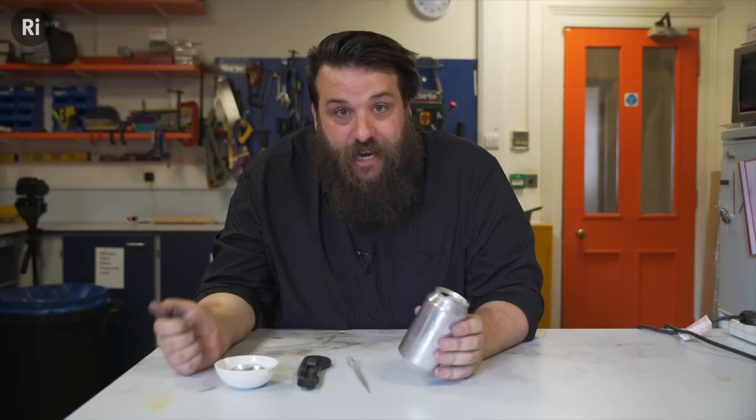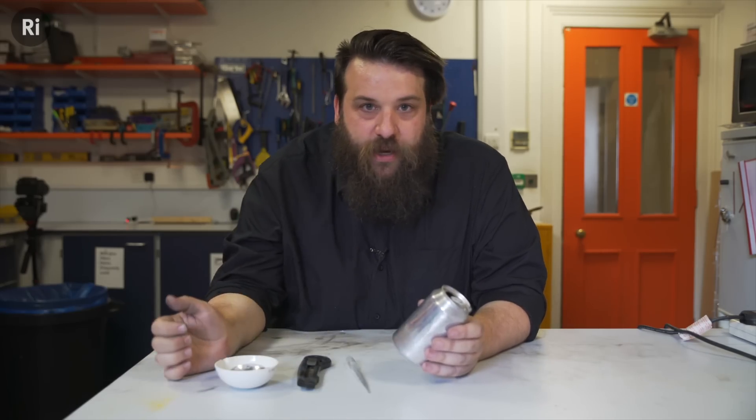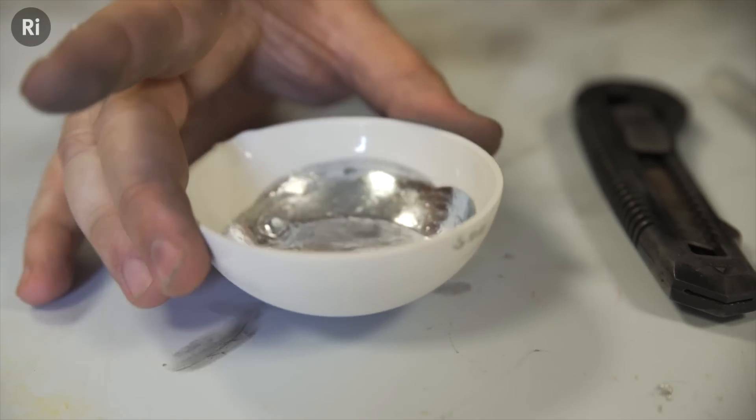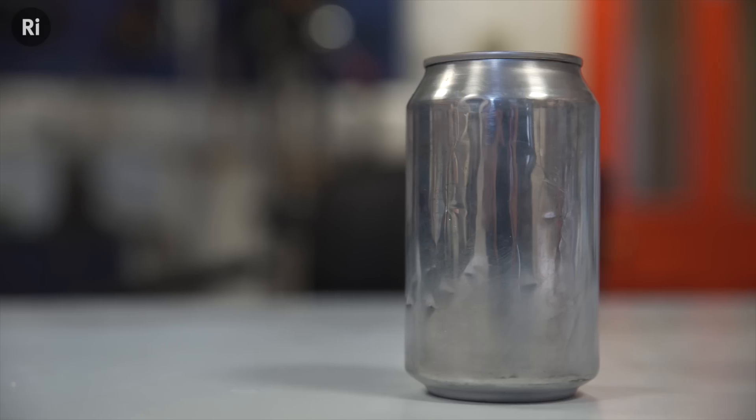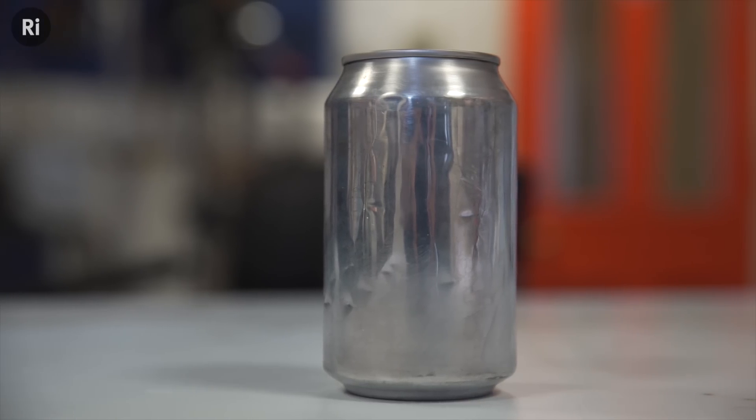A really cool thing we can do with gallium involves aluminium. So I've got an empty aluminium drinks can, which we've sanded all the paint off of, and some liquid gallium here. Now applying a small drop of this to the aluminium is going to do something really interesting.